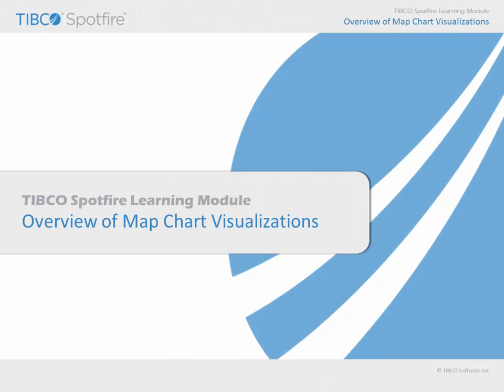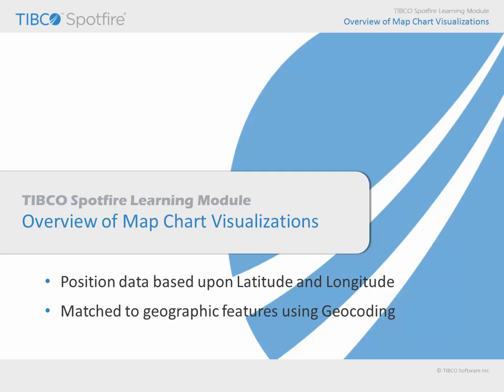In this learning module, we will consider the ways in which map charts may be used to visualize data, including the fact that your data may be positioned on a map based upon latitude and longitude values presented in your data table. Alternatively, other values in your data table may be matched to geographic features in geocoding data tables in an effort to relate and position your data on the map.